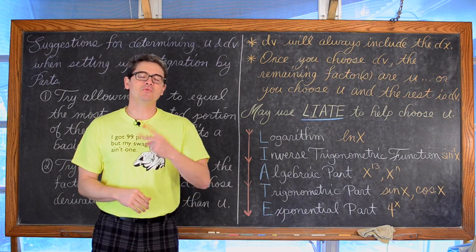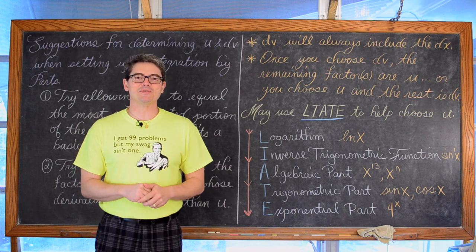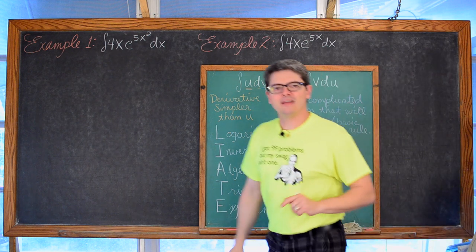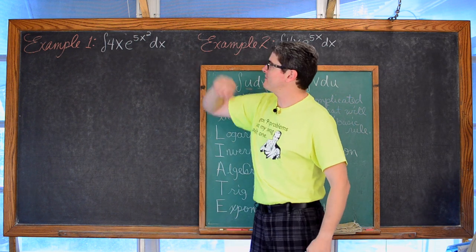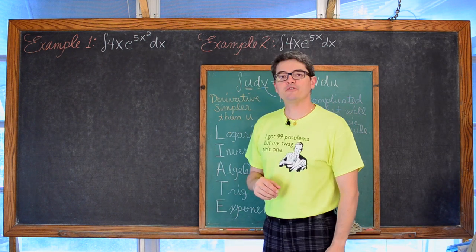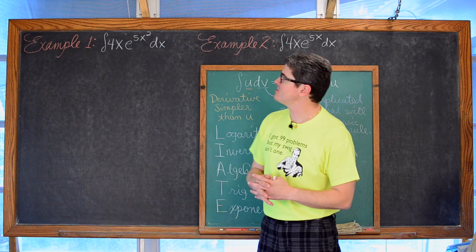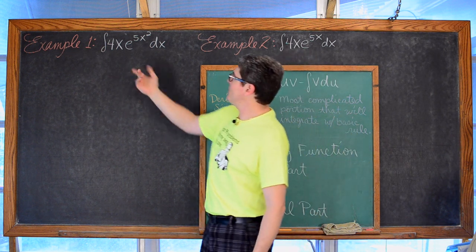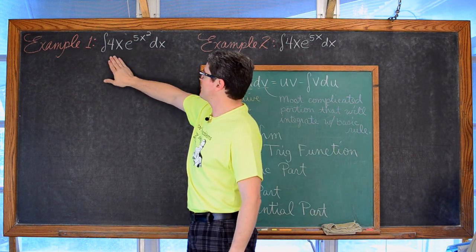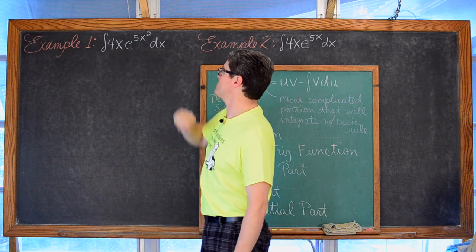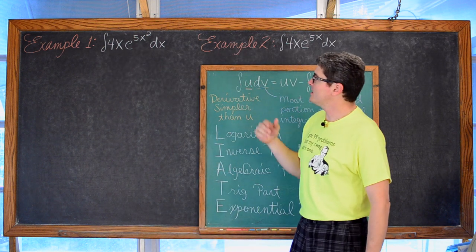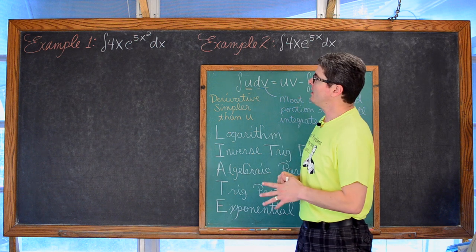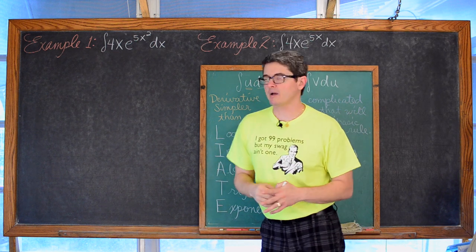Let's get on to our first two examples. For our first example, we have the indefinite integral of 4x times e to the 5x squared dx. We see that we do have a product going on here with an algebraic portion and a natural exponential function, so it seems like this would be a good fit for integration by parts.